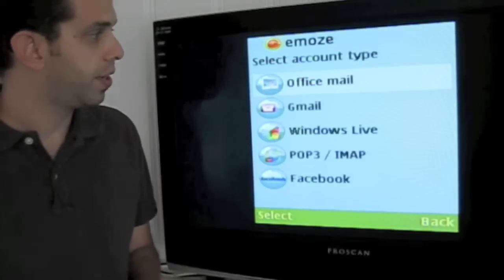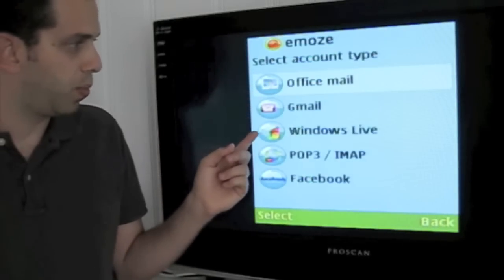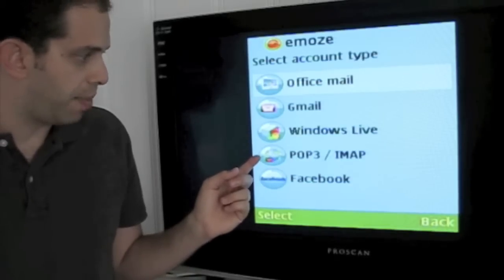Now we want to add a new account. Notice we have Office Mail, Gmail, Windows Live, POC3, IMAP, Facebook.